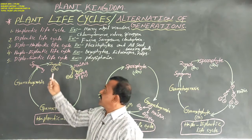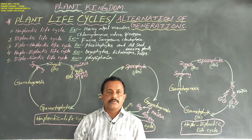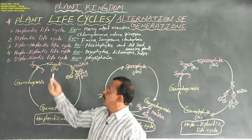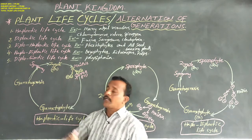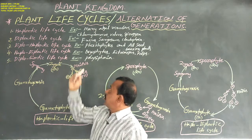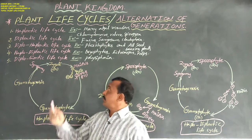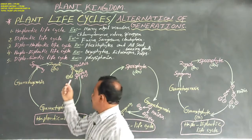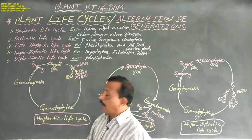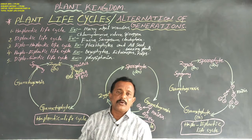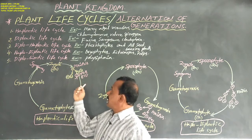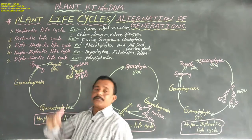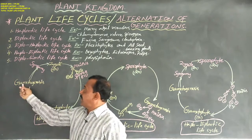In sporophytic generation, it would be developed from a one-celled diploid zygote. This one-celled diploid zygote undergoes meiosis to produce meiospores. These meiospores have a haploid number of chromosomes. These meiospores are again developed to gametophyte. These spores undergo mitosis to form a gametophyte. In this gametophyte, haploid gametes are produced — that is gametogenesis.